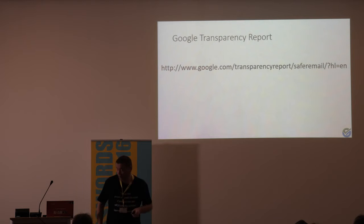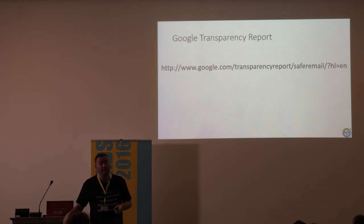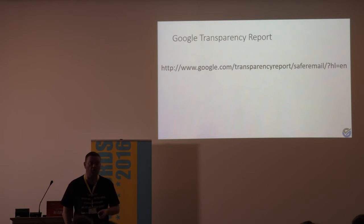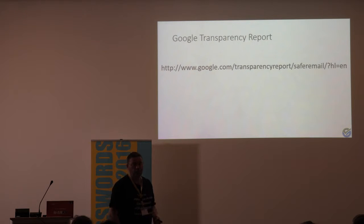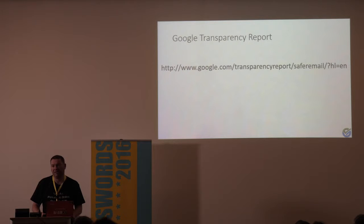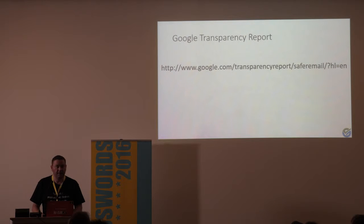Google also came out in their transparency report — they now publish monthly numbers on what percentage of emails in and out of Google are using STARTTLS. When we launched StarTLS.info, we saw approximately 20% of domains on the internet using STARTTLS. Six months after that, thanks to ACLU and EFF especially, we had gone past 50% on a worldwide basis.